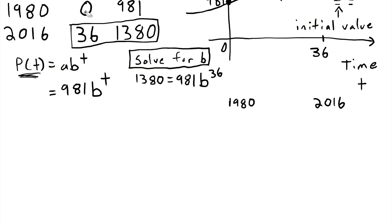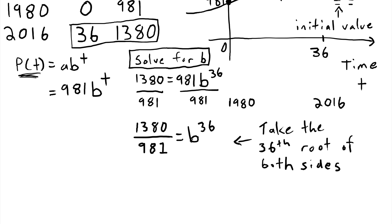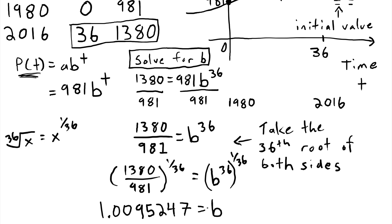So giving myself a little bit more room here to solve this for b. I'm going to divide both sides by 981. So in order to solve for b, I'm going to have to take the 36th root of both sides. And then if I round to five significant digits I have solved for b.